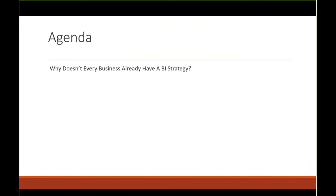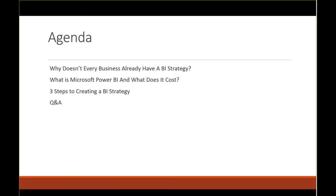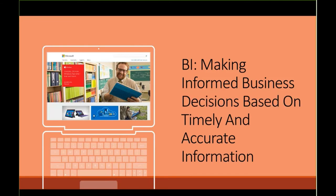The first question is why everyone does not already have a BI strategy. Second, we'll talk about what Power BI is and how much it costs. And lastly, we'll review the three steps we need to create a BI strategy. I should have time at the end for Q&A. Before we begin, I want to share my definition of BI: business intelligence is making informed business decisions based on timely and accurate information. A BI strategy is about providing you the means to obtain that information for everyone who needs it.